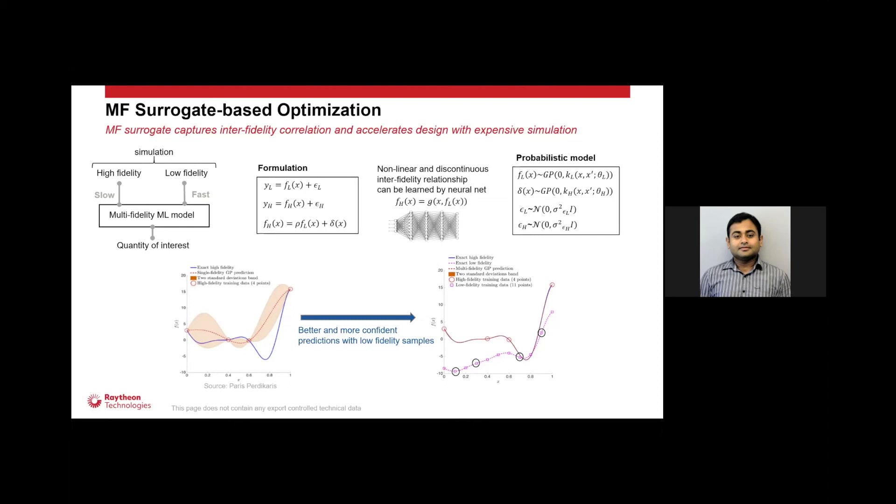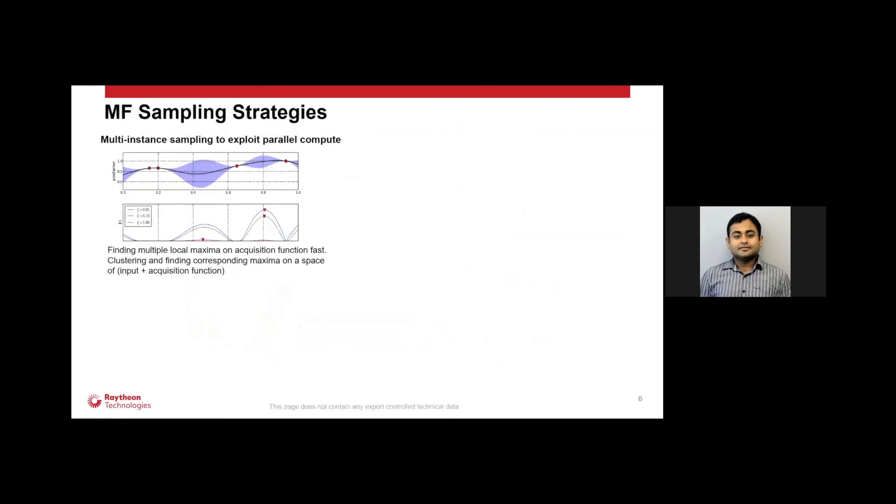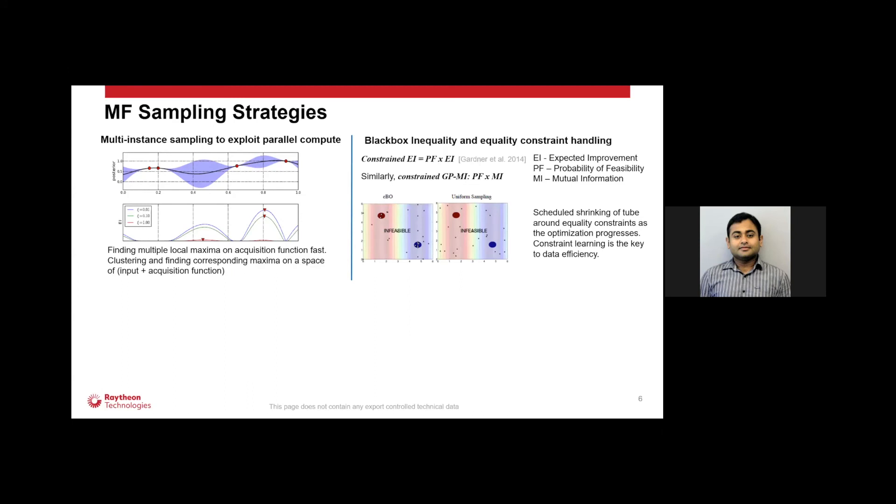If the low fidelity is really cheap in compute, we can sample most of that and still perform a good quality design. In generally Bayesian framework, the key function which controls the sampling areas is called acquisition function. In this particular paper, we introduced a few things such as multi-instance sampling to exploit parallel compute. Bayesian frameworks are generally single-point sampling. There are some batch sampling also, but they can be quite expensive. But here, depending on the clustering of the input and the acquisition function, we can sample very diverse points, instances, where we can run different fidelities. That accelerates and uses the parallel compute much better than the state-of-the-art.